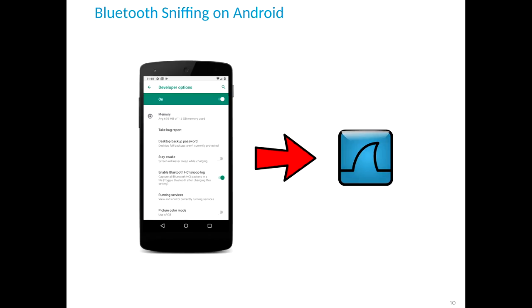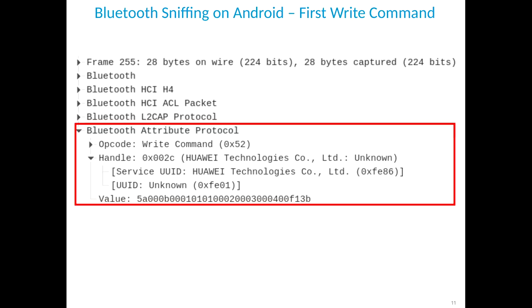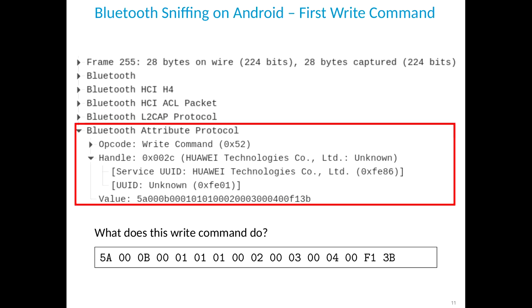When I started the reverse engineering, I had no idea about the communication protocol — I only knew it was using Bluetooth. On Android, you can sniff Bluetooth communication via an option in the developer settings. You enable it, the smartphone creates a log file stored on the SD card, and you can open it with Wireshark. Here you can see a screenshot of my Wireshark analysis showing the first write command from the smartphone to the watch. Of course I had no idea what this write command was, so I decided to do some static program analysis.